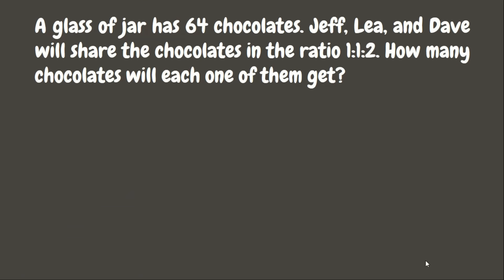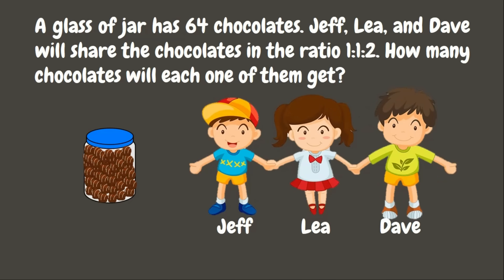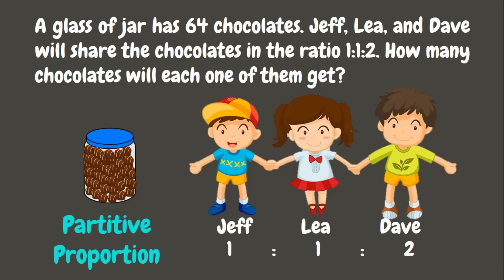The last jar has 64 chocolates — hmm, yummy! Jeff, Leah, and Dave will share the chocolates in the ratio 1 is to 1 is to 2. How many chocolates will each one of them get? In this problem, we need to divide 64 chocolates among Jeff, Leah, and Dave considering the given ratio. This is an example of a partitive proportion.